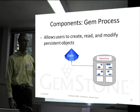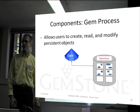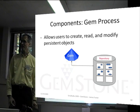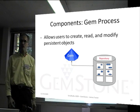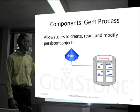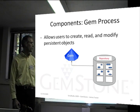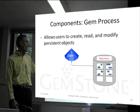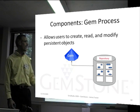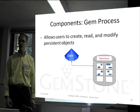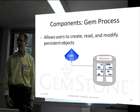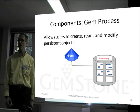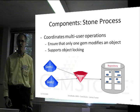Now we have the part that represents the virtual machine. This is the part that executes Smalltalk code. The gem — the virtual machine — allows users to create, read, and modify persistent objects. This is the thing that takes care of managing the objects for each logged-in session.